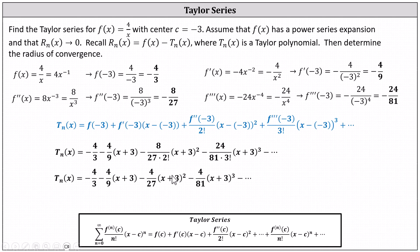Now we want to analyze the pattern so that we can write the summation notation for the Taylor series. Because of the subtraction, we can think of all the numerators being negative four. Looking at the denominators, we have 3, 9, 27, 81, which are all powers of three. Then we have zero factors of x plus three in the first term, one factor in the second, two in the third, and three in the fourth.